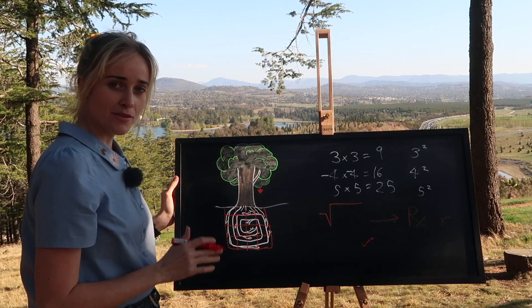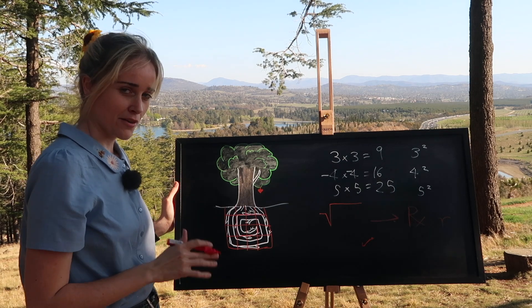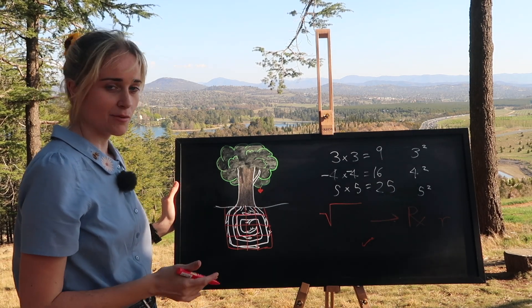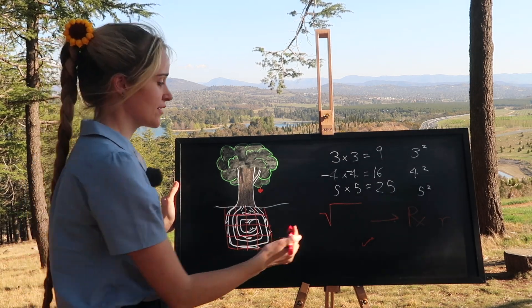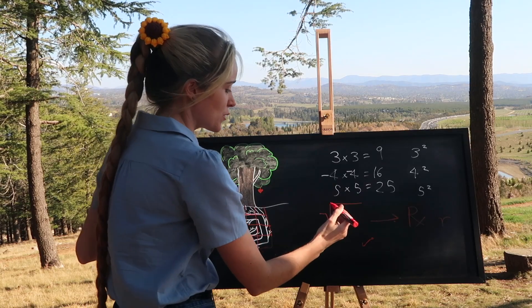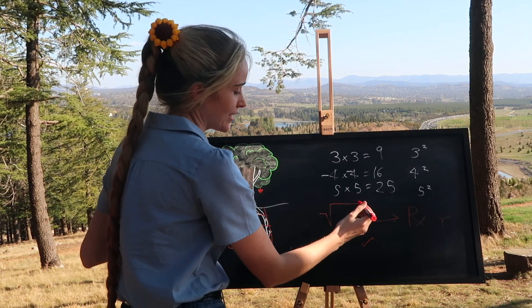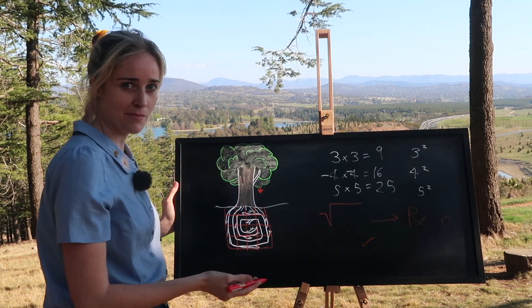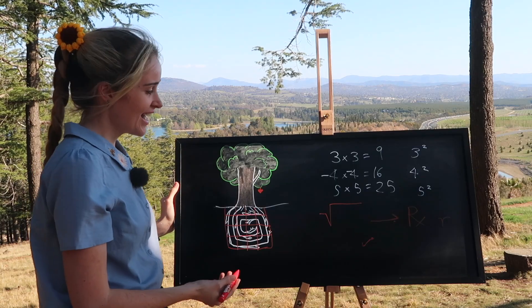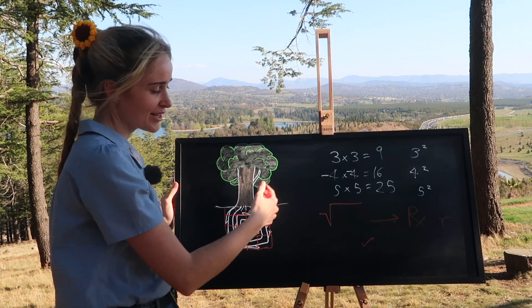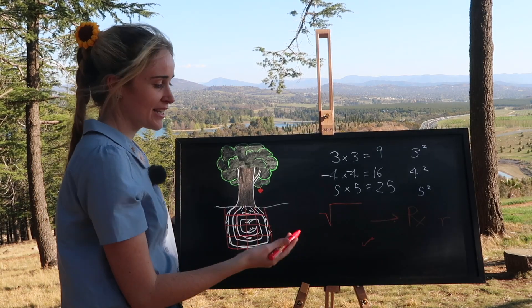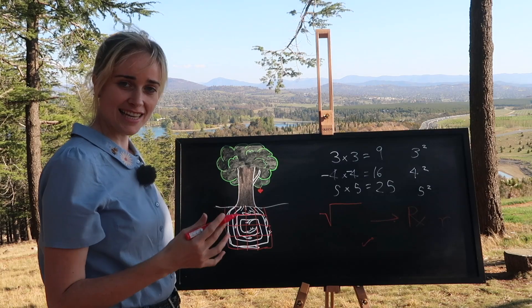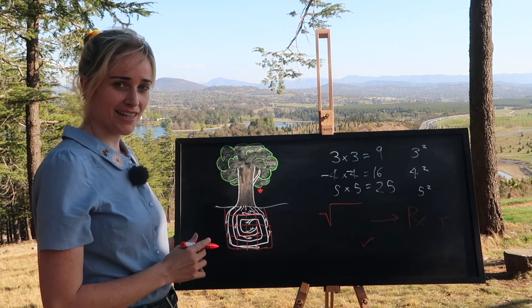What we do know is that in 1637 Descartes was the first to use the square root symbol with this line over the top. It has a name — it's called the vinculum — and it includes everybody in the square root who was supposed to be there. It's like a big group hug.